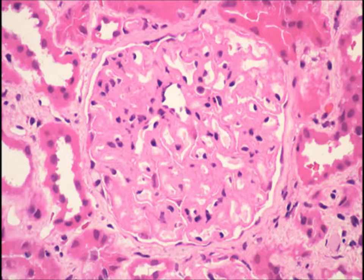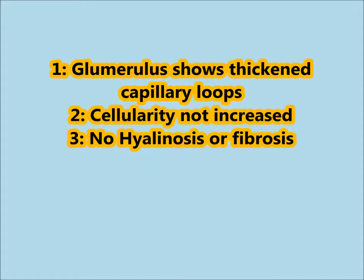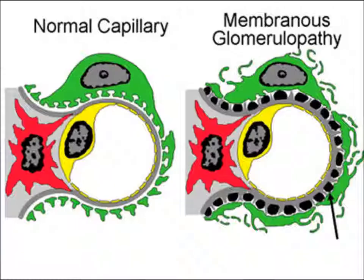Here, you can appreciate the renal biopsy showing thickening of the capillary loops. The glomerulus shows thickened capillary loops; cellularity is not increased, and there is no hyalinosis or fibrosis. In this case, electron microscopy shows sub-epithelial humps.